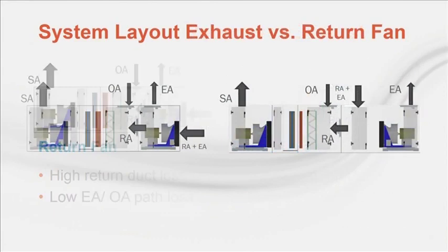For example, here is a return fan and exhaust fan system. A unit with 10,000 CFM supply air, 4,000 CFM outside air, 6,000 CFM return air, and 3,500 CFM exhaust air. The unit has 2 inches of internal static pressure, 1 inch of supply external static pressure, and 0.5 inches on the EA and OA path.